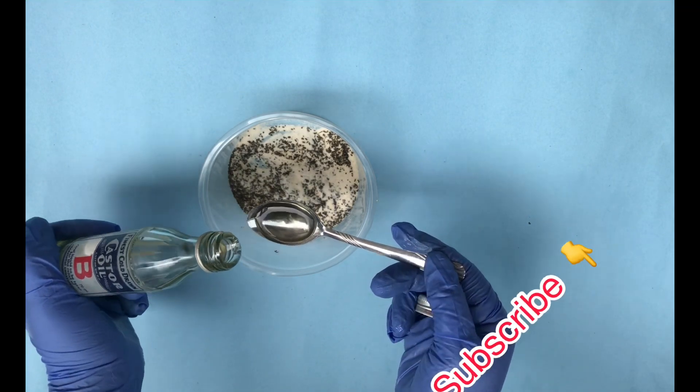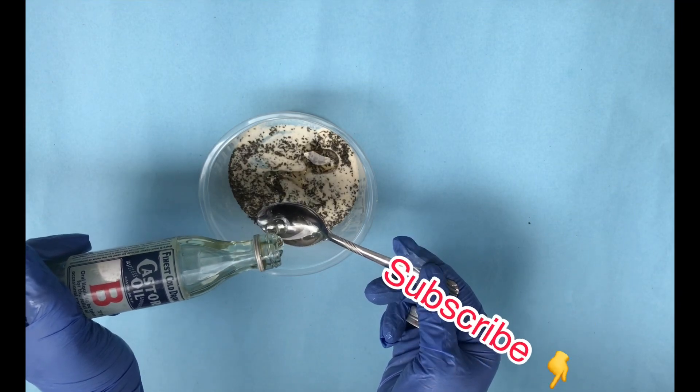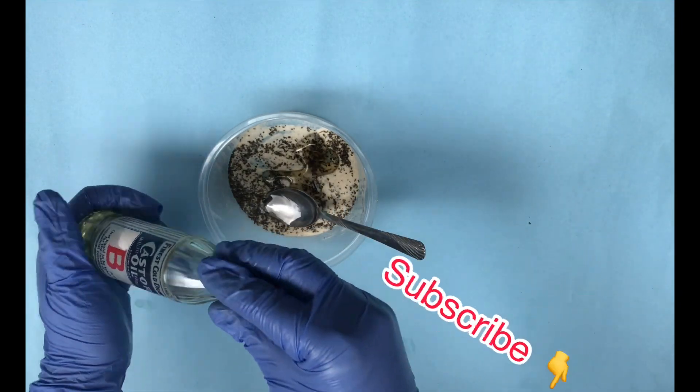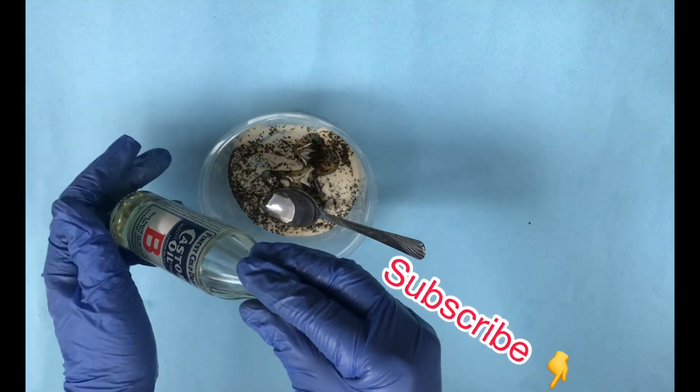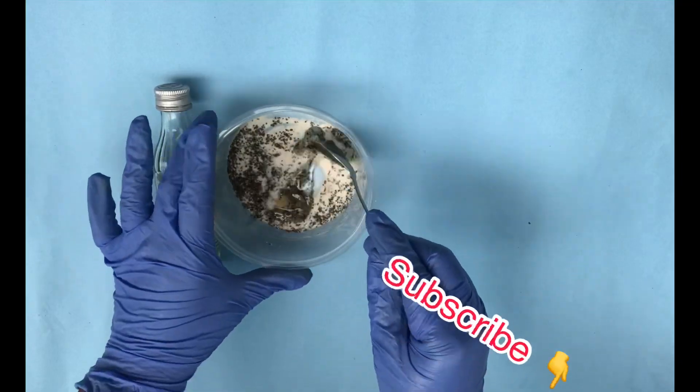I'm pouring in two teaspoons of my castor oil into my bowl where I have my rice flour and my green tea. The combination of these three ingredients is going to help you remove cellulite and varicose veins on your body.